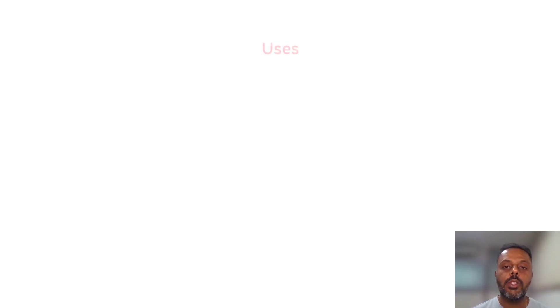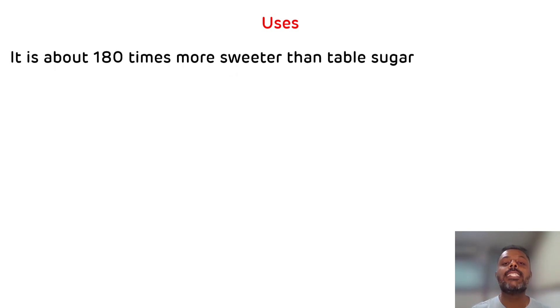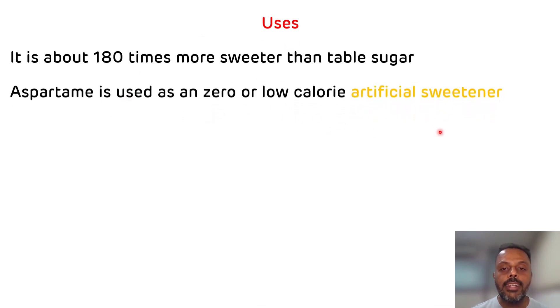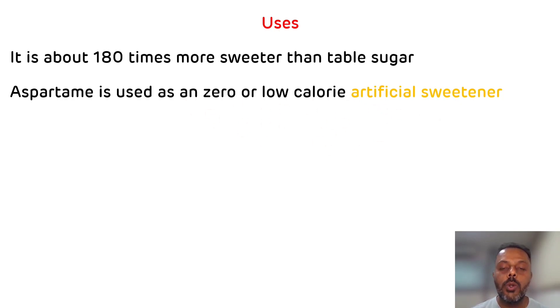Now we will see what are the uses of aspartame. As we have discussed, aspartame is 200 times more sweet as compared to table sugar and it is metabolized as an amino acid. So there is no elevation or alteration of blood sugar. That is why aspartame is used as a zero or low calorie artificial sweetener for diabetic patients. That is all about the usage of aspartame.